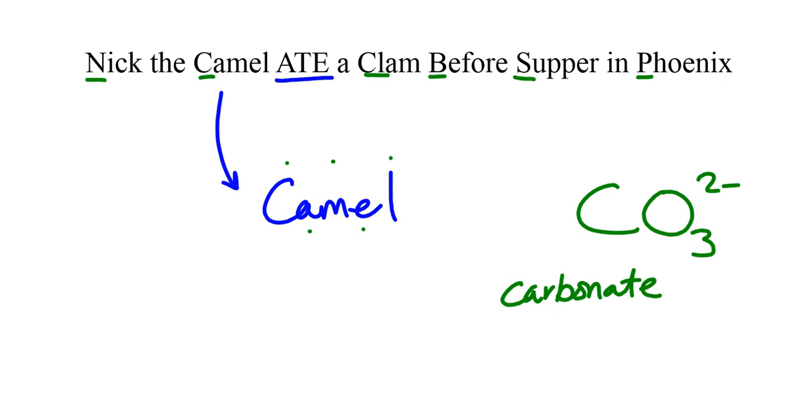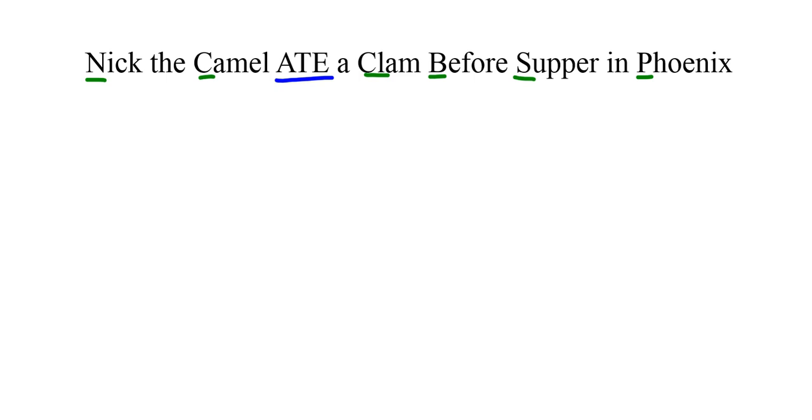So, my carbonate ion is CO3, two minus. And, using the same methodology, we can get chlorate, borate, sulfate, and phosphate.